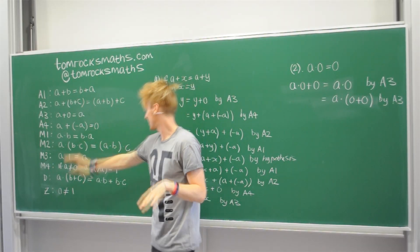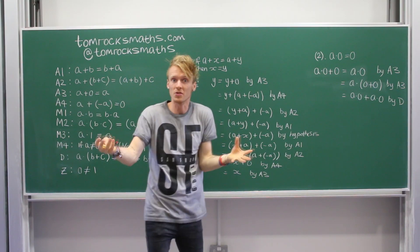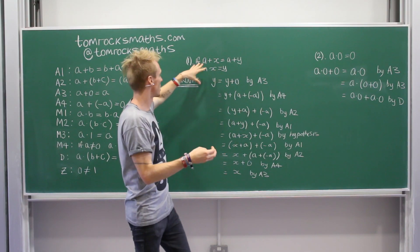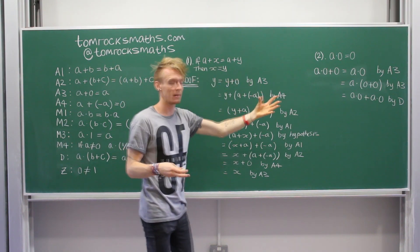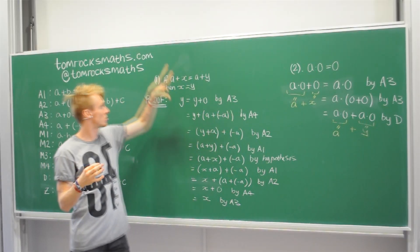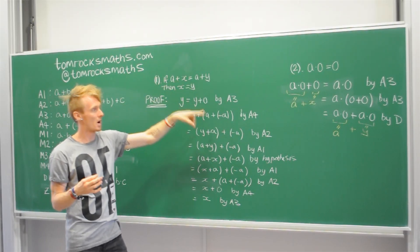Now we're going to use, for the first time, our distribution law, d. And now we can just use the result that we've just proved in number 1. Because a plus x equals a plus y, that's what we have here. So in yellow, what we've got is just rule 1. And rule 1 tells us that x equals y.